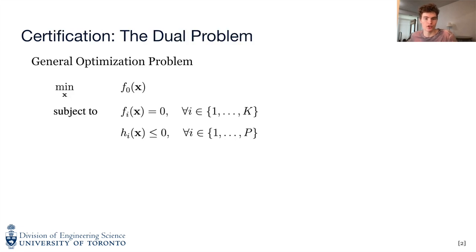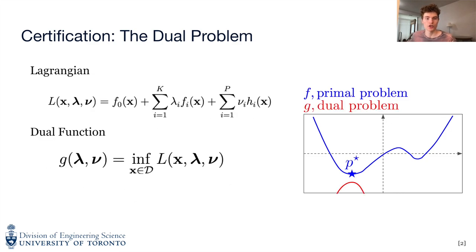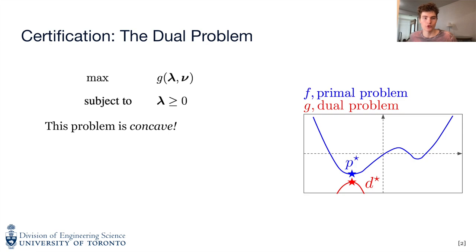We can turn any constrained optimization problem, referred to as the primal problem, into an unconstrained problem by minimizing the Lagrangian. The dual function of the Lagrange multipliers is defined as the infimum of the Lagrangian with respect to x. By definition, this function must always be at least as small as the minimum value of the primal problem. The dual problem involves finding the Lagrange multipliers that maximize the dual function. This is a concave problem, and the maximum of the dual is always at least as small as the minimum of the primal.